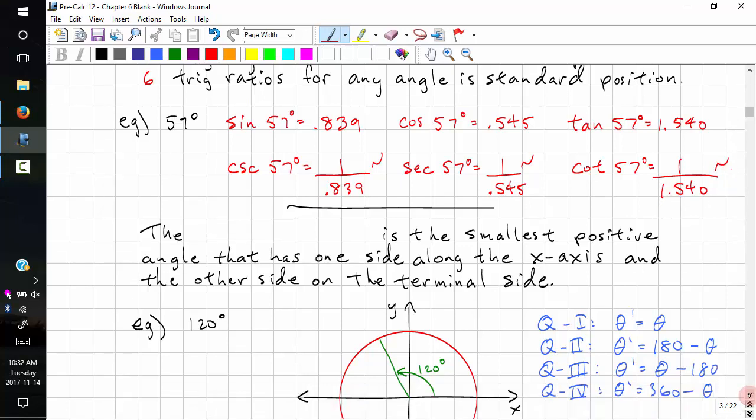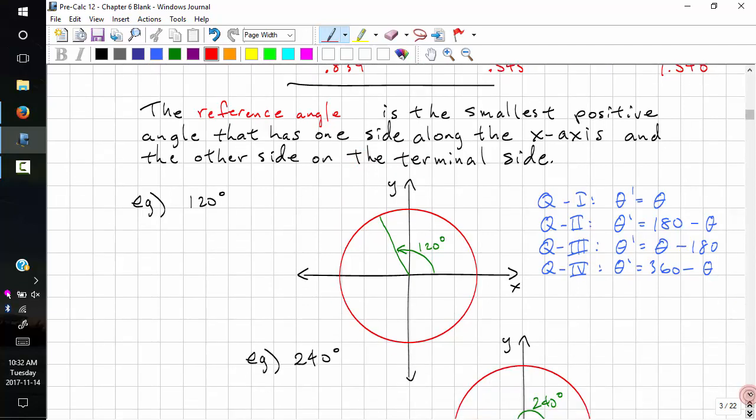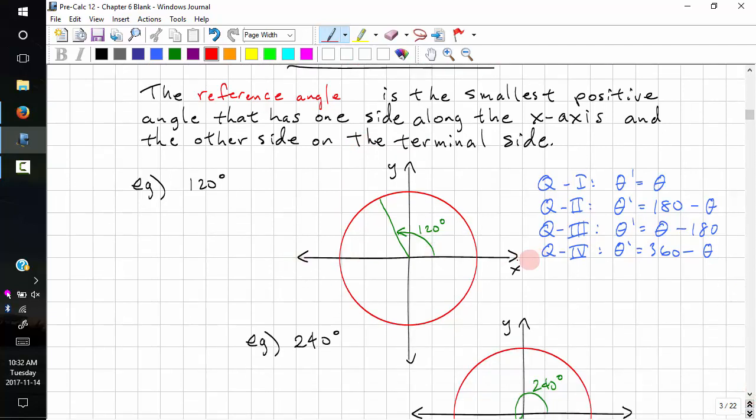Another thing we need to know is the reference angle. It's the smallest positive angle that has one side along the x-axis and the other side on the terminal side. This is the x-axis, this is the terminal side. This is 120.